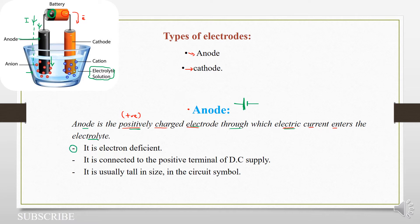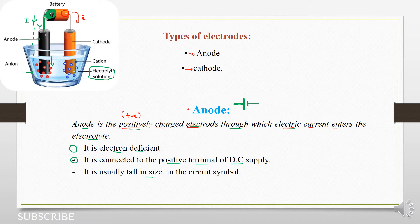What can we take note about the anode? One: because it is electron deficient, it is positively charged relative to the cathode. Two: it is connected to the positive terminal of the DC supply. And usually it's tall in size in the circuit symbol. In our electricity circuits, the anode is connected to this taller stripe in the circuit symbol — this represents positive, while the shorter one represents negative.